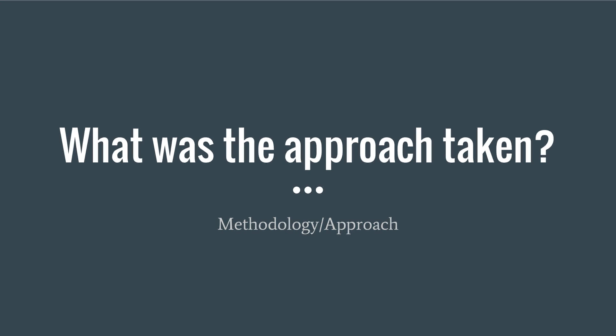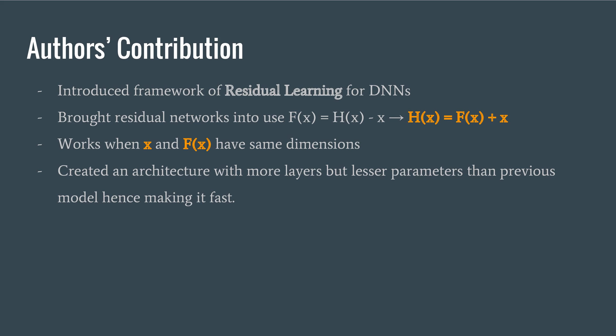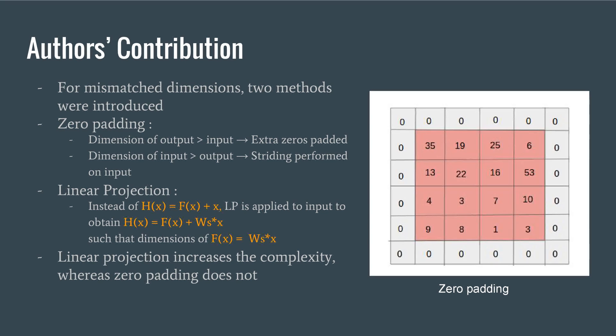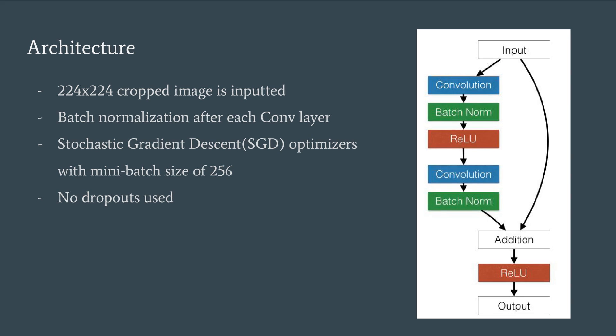Let's look at the approach and the architecture taken by authors. The authors propose a method to approximate the residual function and add that to input. They introduced the concepts of zero padding and linear projection to tackle cases when there is a dimension mismatch. The authors have discussed plain networks which are similar to previous architectures like VGGNet. The model has various operations like convolutions, pooling, batch normalizations, ReLU layers and softmax. Taking plain networks as a base, shortcut connections were added.